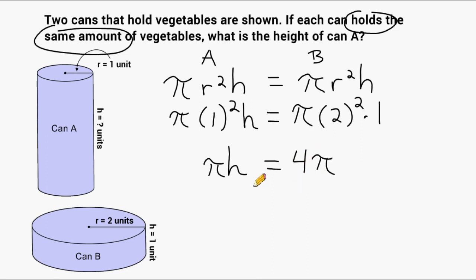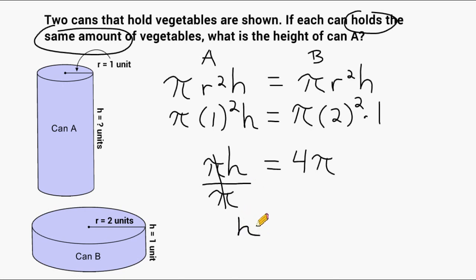Remember, what we're looking for is the height of can A, represented by the variable h. Whatever you are trying to determine in your algebraic equation is what you isolate. We have to get rid of everything else on this side except h, so we divide both sides by pi. Dividing pi by itself gives 1, leaving 1h on the left. On the right, the pi values cancel, leaving only 4. So the height of can A is equal to 4 units.